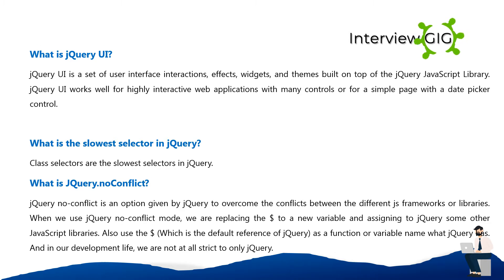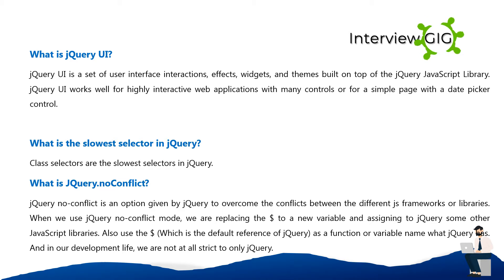What is jQuery UI? jQuery UI is a set of user interface interactions, effects, widgets, and themes built on top of the jQuery JavaScript library. jQuery UI works well for highly interactive web applications with many controls, or for a simple page with a date picker control. What is the slowest selector in jQuery? Class selectors are the slowest selectors in jQuery.